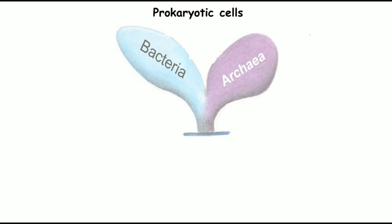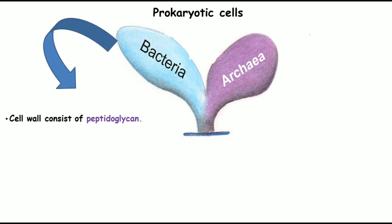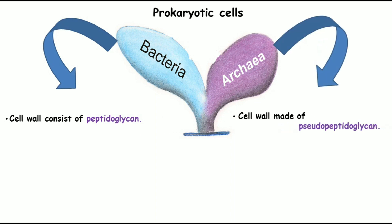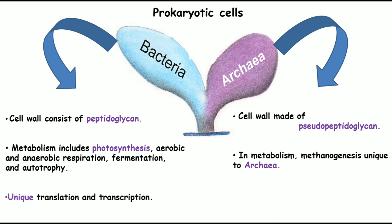Prokaryotic cells are divided into two kingdoms: Bacteria and Archaea. The bacterial cell wall is composed of peptidoglycan, whereas the archaeal cell wall is composed of pseudopeptidoglycan. Bacteria show diverse metabolism including photosynthesis, various types of respiration, fermentation, and autotrophy, while Archaea mostly depend on methanogenesis, a property specific to them. The translation and transcription mechanisms in Archaea are similar to eukaryotes, which places them closer to eukaryotes evolutionarily.